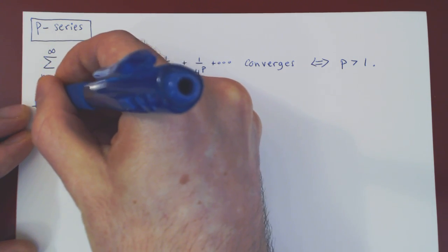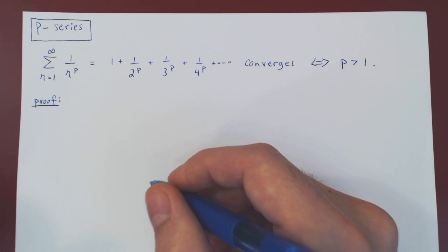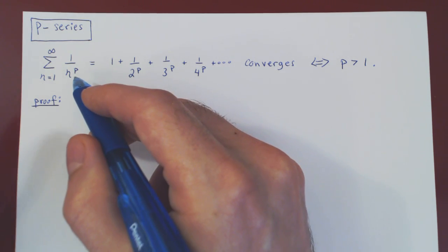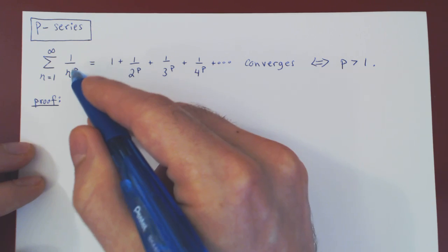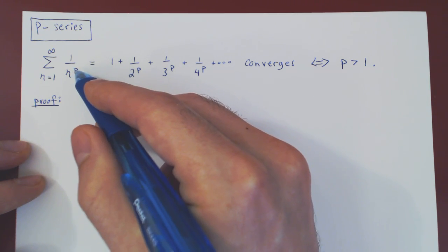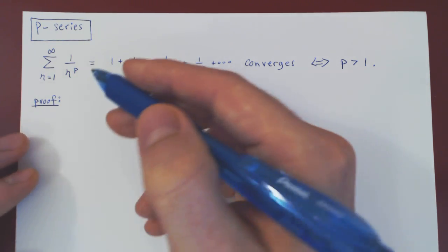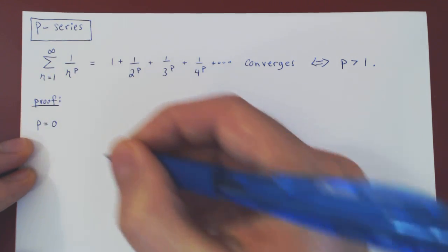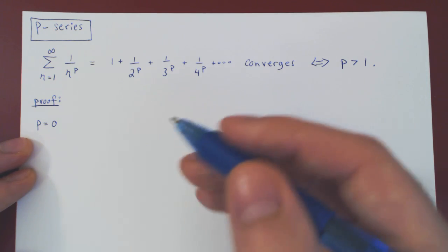With our previous work, the help of the divergence test and the integral test, this will be a rather short proof. But we will have to break it down into special cases for values of p. Recall that p can be any real number. So let's begin with two special cases — we'll eliminate those, and then give a general argument for the other possibilities.